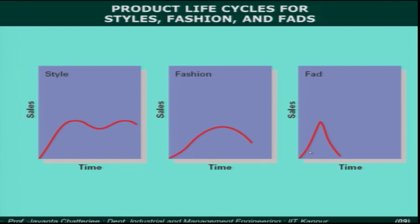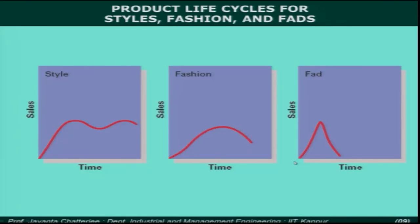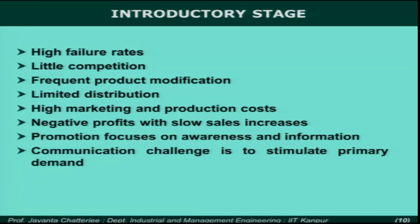Even high-technology products like semiconductors almost follow the same fad-like life cycle. Semiconductor products are introduced, very rapidly accepted, and then replaced by the next generation. The life of a semiconductor chip today is something like 6 to 8 months or maybe a year, even though it takes maybe 3 years of R&D to produce the next generation of chips. That means by the time you finish one development, that requirement may already be gone. That is why in high technology today you may have 3, 4, or 5 parallel development projects running side by side.